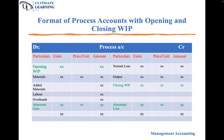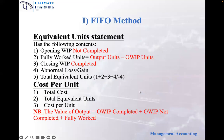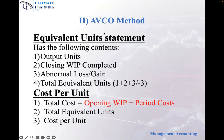Note that in the process account format, opening work in progress is posted on the debit side and closing work in progress is posted on the credit side — the rest remains the same. Under AVCO method, the equivalent unit statement shows output units, closing work in progress units completed, abnormal loss or gain units, and total equivalent units.